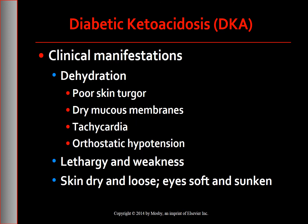Clinical manifestations: Dehydration occurs in DKA with manifestations of poor skin turgor, dry mucous membranes, tachycardia, and orthostatic hypotension. Early symptoms may include lethargy and weakness. As the patient becomes severely dehydrated, the skin becomes dry and loose with very poor skin turgor, and the eyes become soft and sunken.